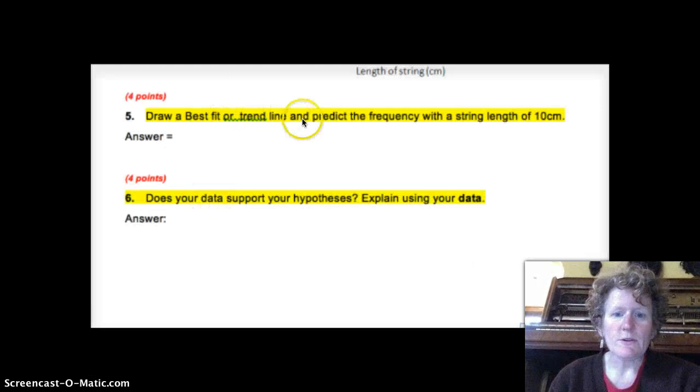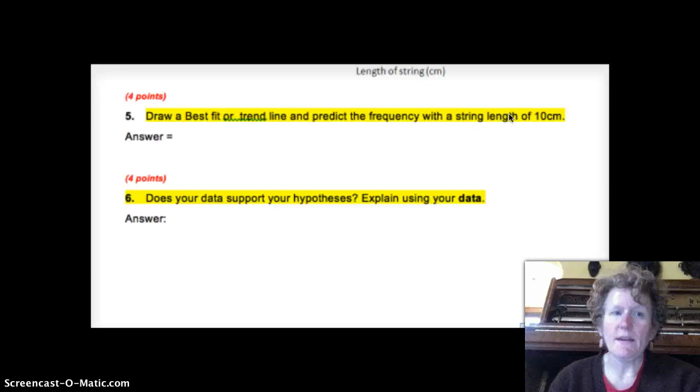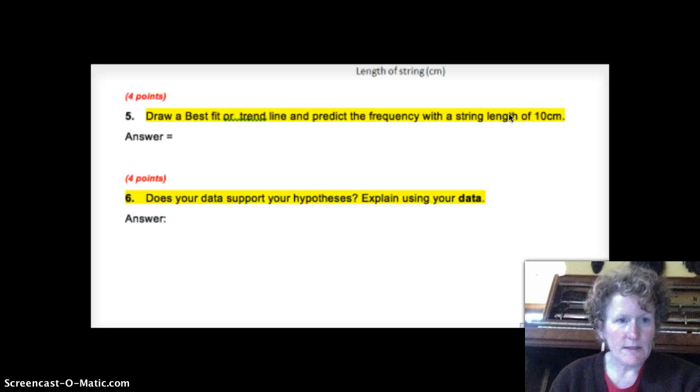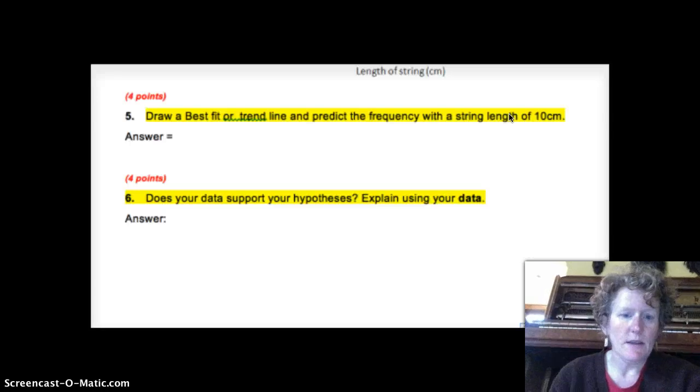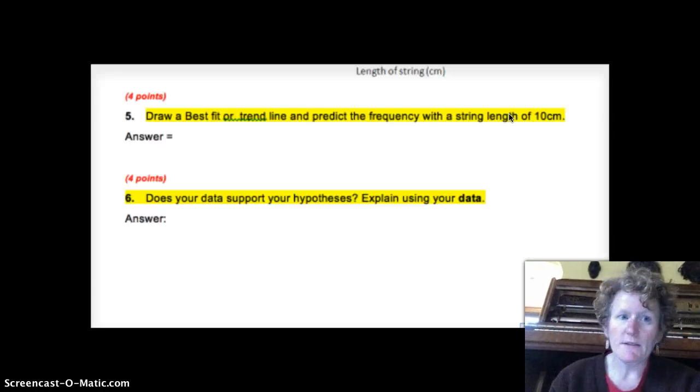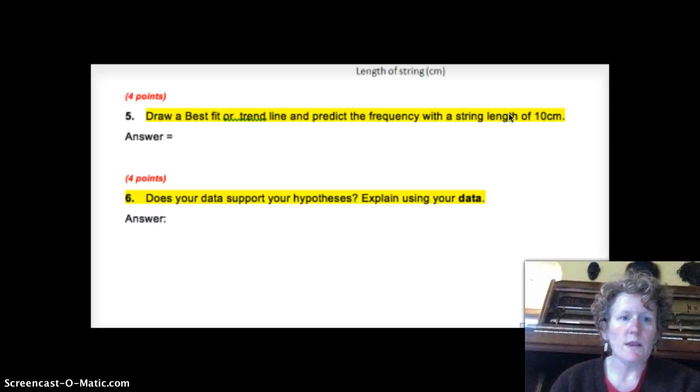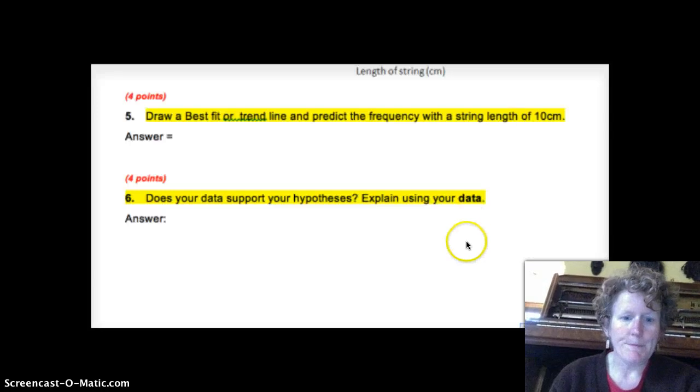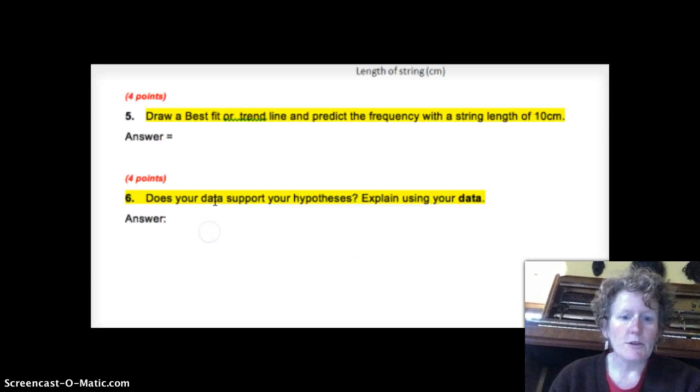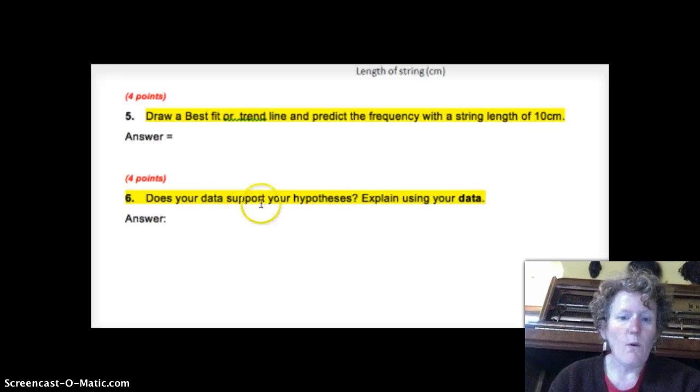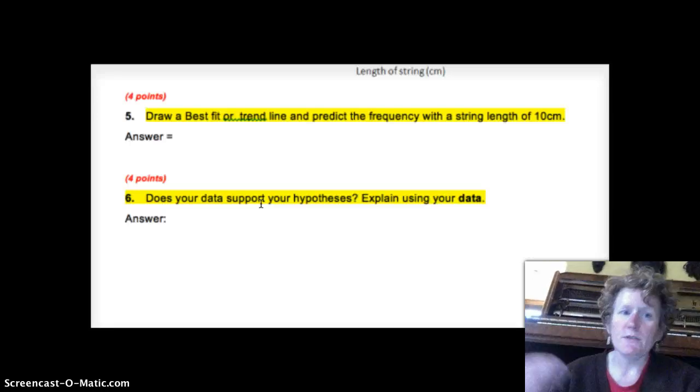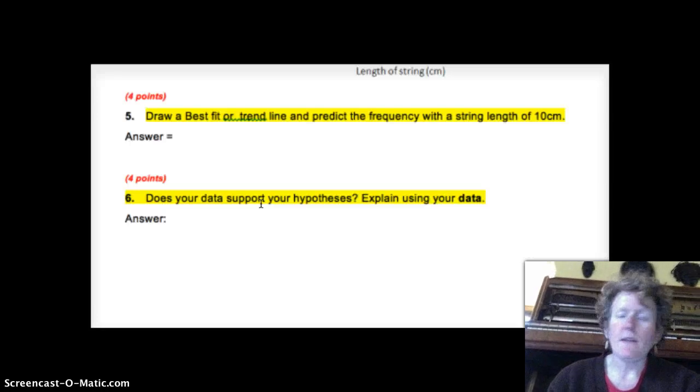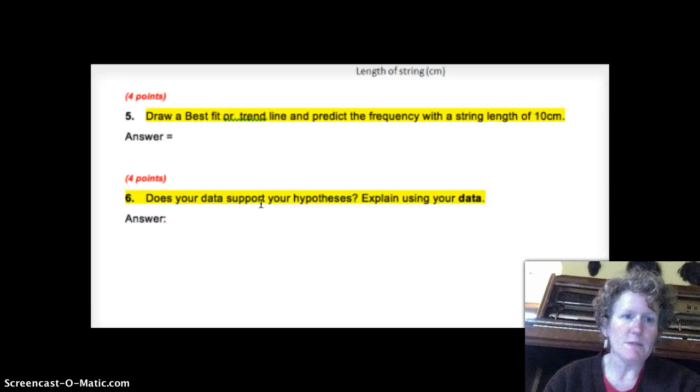So draw a best fit or trend line, and predict the frequency with a string length of 10 centimeters. Now you can't actually do that in the lab. You can't go down to 10 centimeters. But you can extend the line that you created on your graph to make a good estimate of what things are going to look like at 10 centimeters. Do you think the frequency is going to get higher as the string gets shorter? Or do you think the frequency will get lower as the string gets even shorter? And then make sure you use your data to support your hypothesis or refute your hypothesis. You don't prove your hypothesis is correct. We don't prove hypotheses. We either support them with specific data, like the number of hertz increased or decreased, and you can use a specific data point.